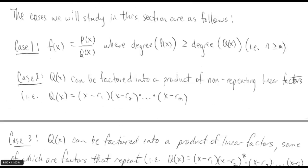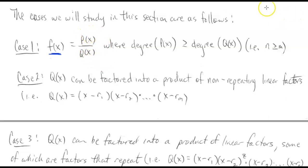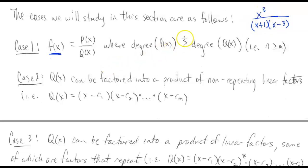For case one, our integrand f(x) will be a rational function where the degree of the numerator is larger than the degree of the denominator — something like x cubed divided by (x+1)(x−3). The degree of the numerator there is three, so that meets this condition.